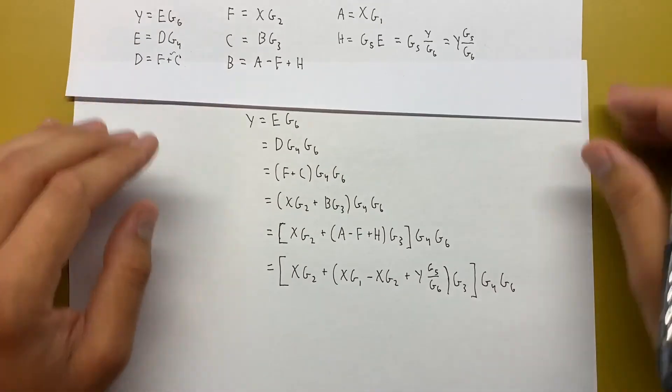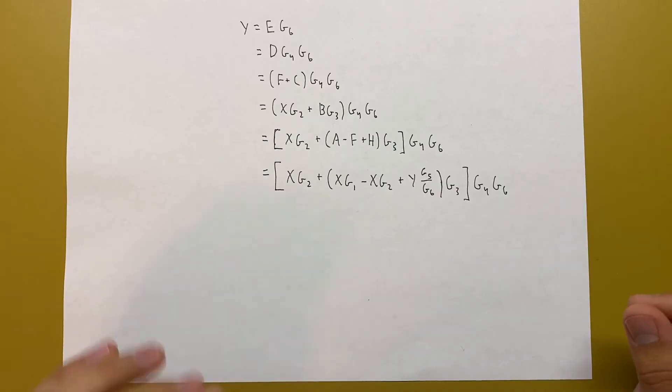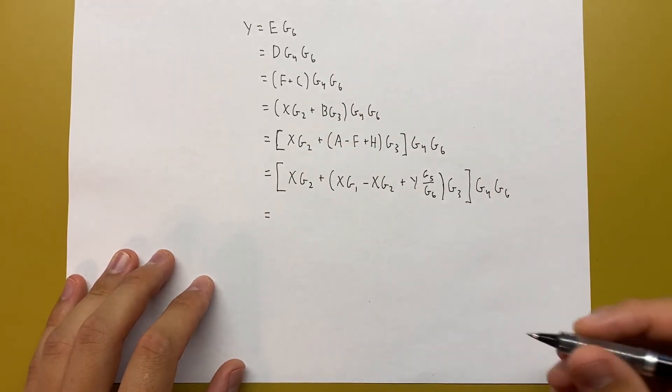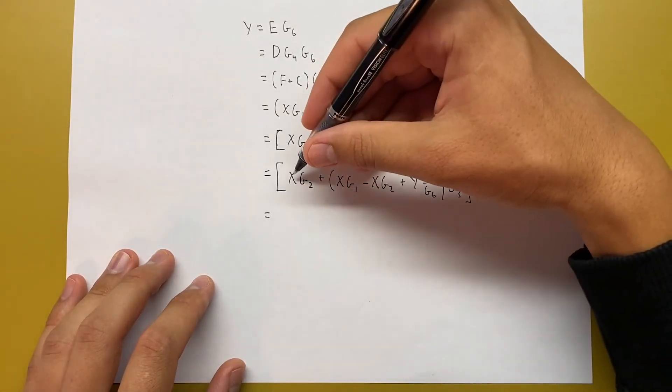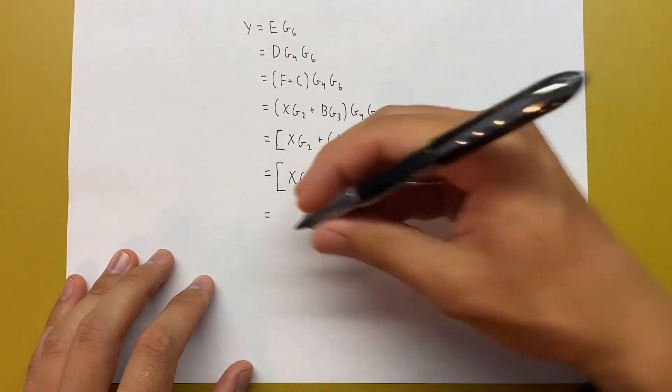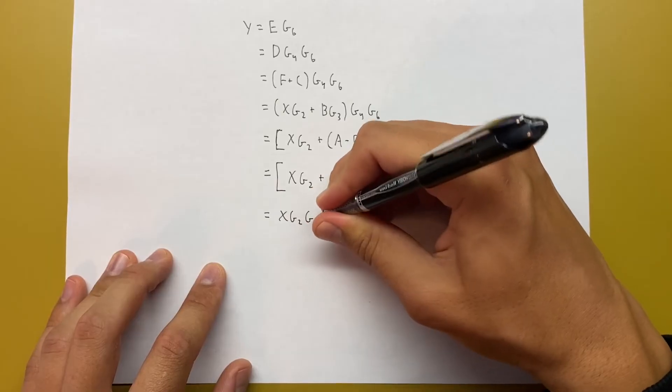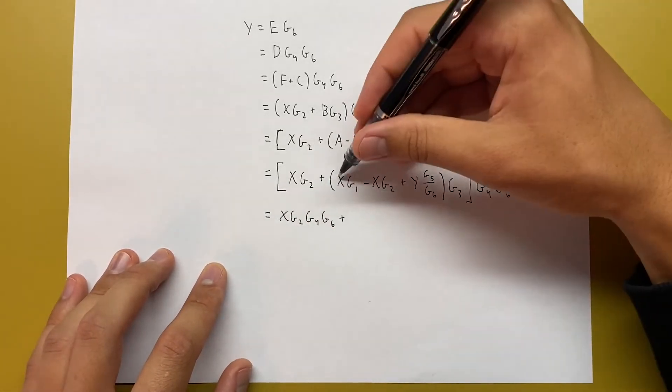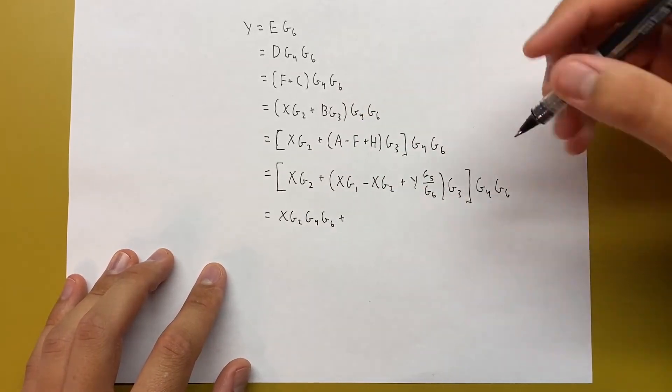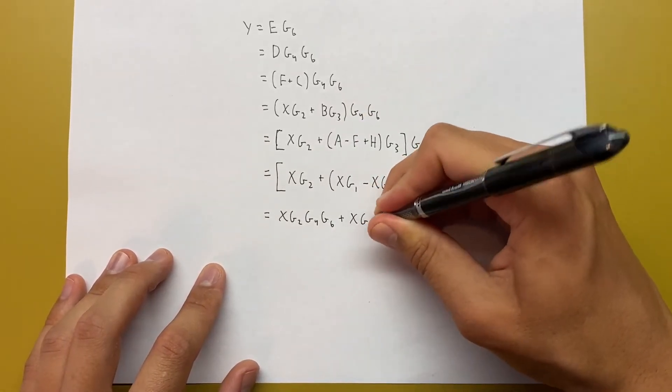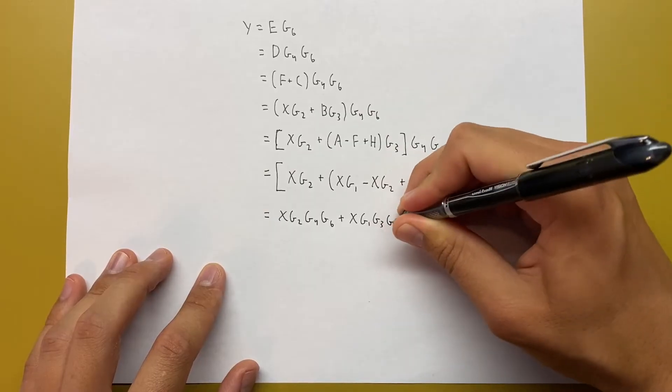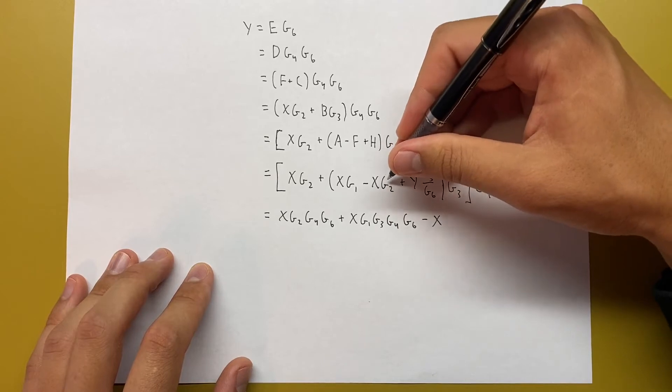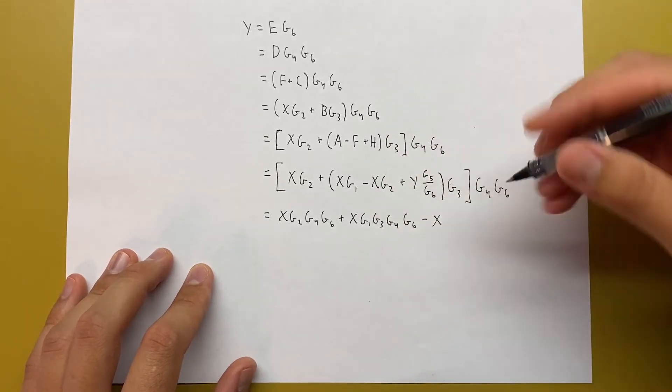Now it's just a matter of some algebra. I'm going to multiply all this out to get individual terms. With the first term, we'll have X G2 G4 G6 plus X G1 G3 G4 G6 minus X G2 G3 G4 G6.